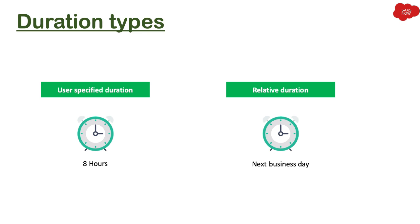These duration types define the length of time within which a task must be completed before the SLA is breached. In user-specified duration you mention the duration — it might be four hours, eight hours, or five minutes. In relative duration you have more options, such as next business day, end of next business day, or next business day by 4 p.m.